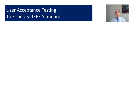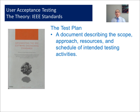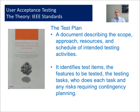In Touchstone we use an international standard published by the IEEE to look at the way we're approaching test planning. There are two items we'll look at here. On the test plan we say what it is that we're going to do to describe the scope, approach, resources and schedule of intended activities. And this identifies the test items: what are the features to be tested, who's doing the tests, and what are the risks and tasks involved?